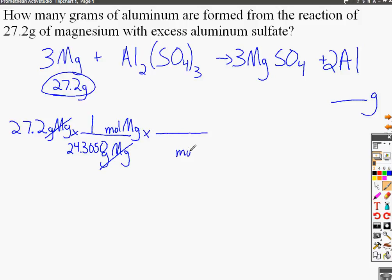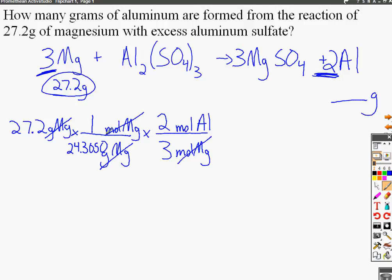Now that we're at moles of magnesium, we can convert to moles of our desired element, aluminum. This uses the stoichiometric ratio—the 3 to 2 ratio from the coefficients in the balanced equation. The 3 goes with magnesium and the 2 goes with aluminum. The moles of magnesium cancel out, leaving us with moles of aluminum.